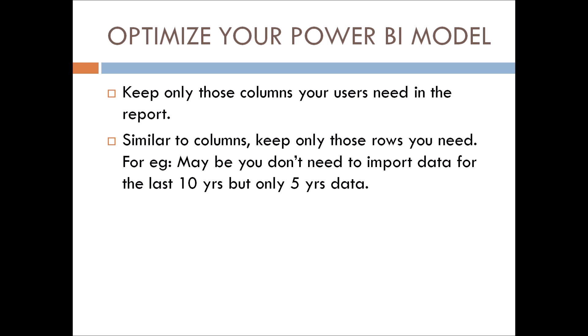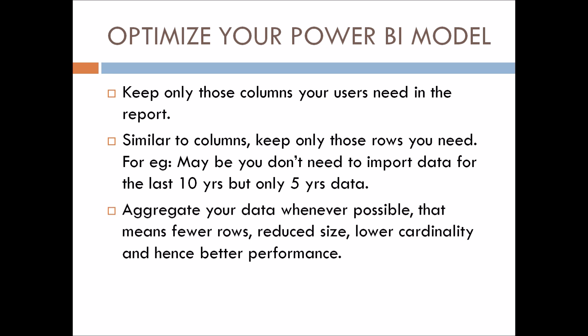The third point is: aggregate your data whenever possible. Aggregating your data means fewer rows, which reduces the model size. It also lowers cardinality — cardinality means the uniqueness of rows in a column. Since the size will be reduced, cardinality will also be reduced, resulting in better performance and a better model. Do aggregations wherever possible.